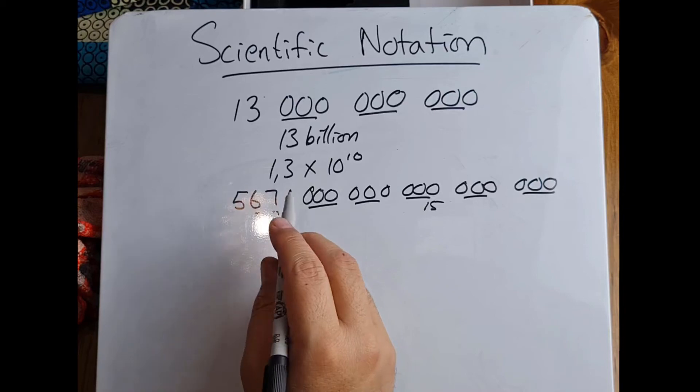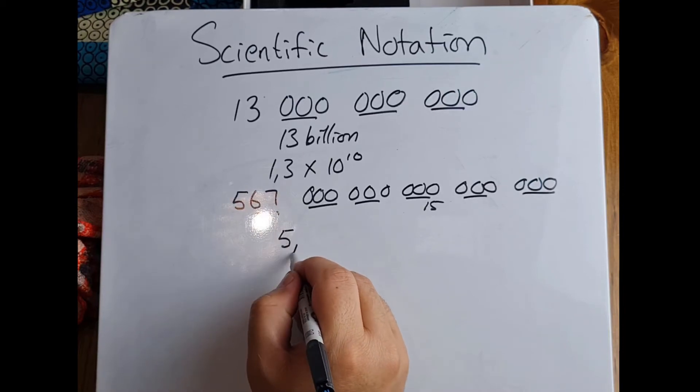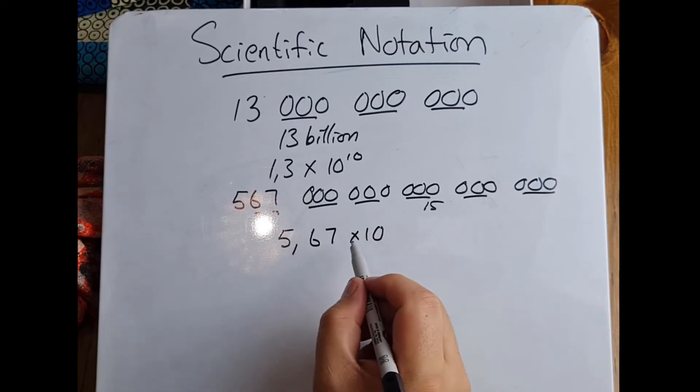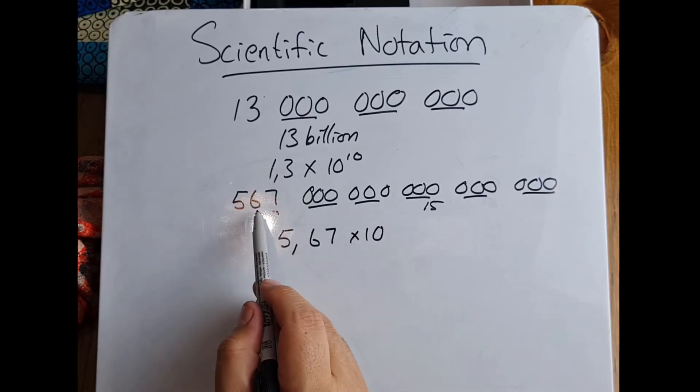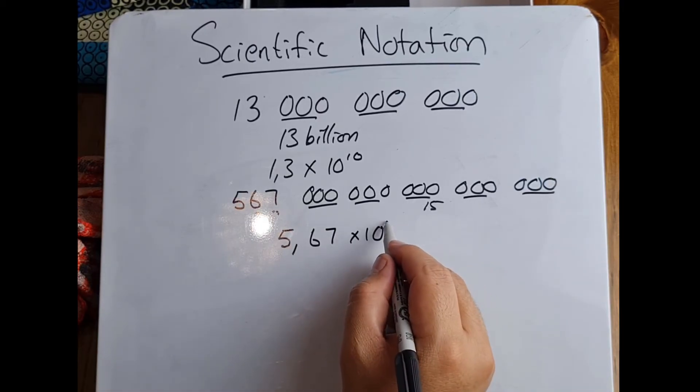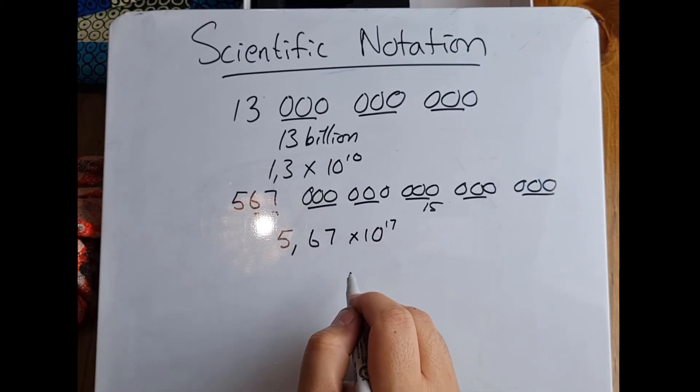out in scientific notation, I can say 5.67 multiplied by 10 to the power—what? I've got 15 plus these two, because this would normally be zeros, so that's going to be 17, and that's how I get that.